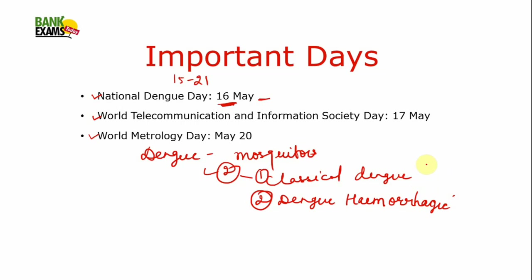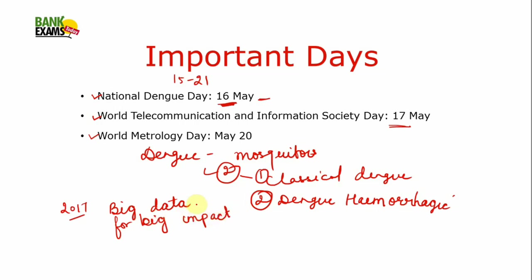Both are forms of Dengue. The second important day is World Telecommunication and Information Society Day on 17th May. The theme for 2017 was 'Big Data for Big Impact'. The theme highlighted the technological developments that have facilitated the emergence of big data, representing the importance of all data stored across different computers, laptops, and other resources.